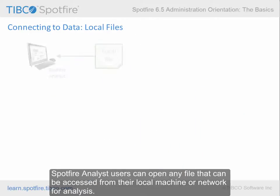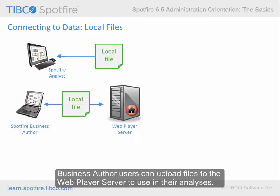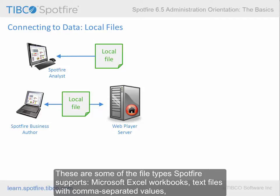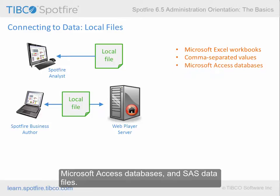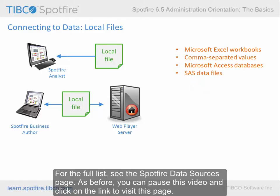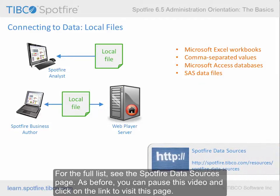Spotfire Analyst users can open any file that can be accessed from their local machine or network for analysis. Business author users can upload files to the web player server to use in their analyses. These are some of the file types that Spotfire supports: Microsoft Excel workbooks, text files with comma-separated values, Microsoft Access databases, and SAS data files. For the full list, see the Spotfire data sources page. You can pause this video and click on the link to visit this page.